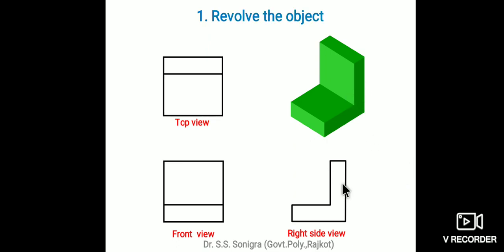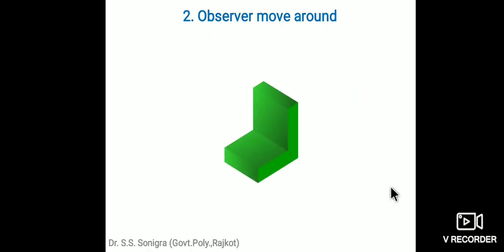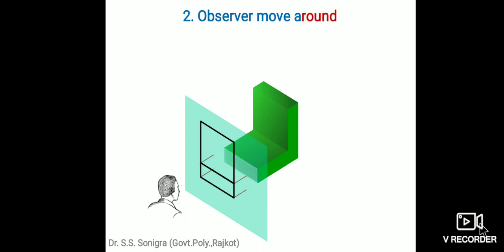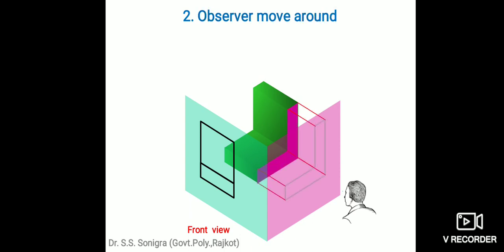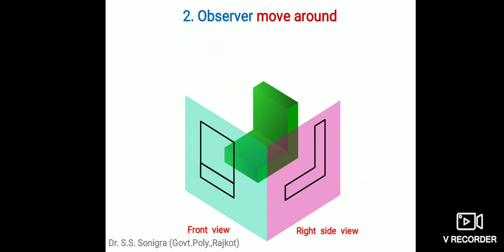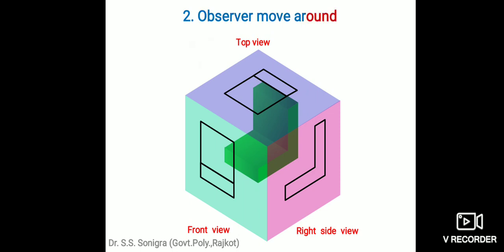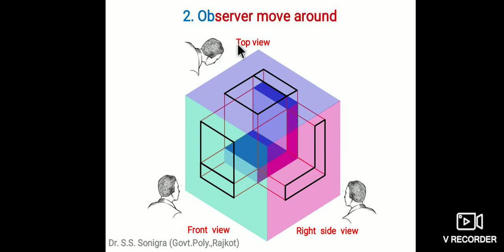The second method is the observer moving around the object. The observer looks from the front side — this is the front view with an upper rectangle and lower rectangle. Then the observer moves to the right side and draws whatever is visible — this is the right side view. Then the observer moves to the top and sees the object from above — this is the top view. The answer is the same whether the object is moved or the observer is moved. These are the three views: front view, top view, and side view.